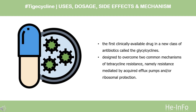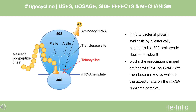However, the glycylcyclines appear to bind more effectively than the tetracyclines. Mechanism of Action: Tigecycline, a glycylcycline, inhibits protein translation in bacteria by binding to the 30S ribosomal subunit and blocking entry of aminoacyl-tRNA molecules into the A site of the ribosome, preventing incorporation of amino acid residues into elongating peptide chains. Tigecycline carries a glycylamido moiety attached to the 9 position of minocycline. Tigecycline is not affected by the two major tetracycline resistance mechanisms: ribosomal protection and efflux.